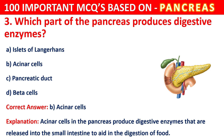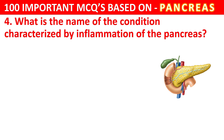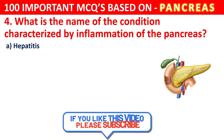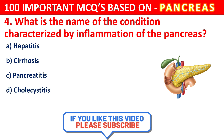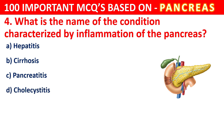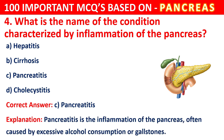Question 4. What is the name of the condition characterized by inflammation of the pancreas? Your options are Hepatitis, Cirrhosis, Pancreatitis, or Cholecystitis. The correct answer is C, that is Pancreatitis. Pancreatitis is the inflammation of the pancreas, often caused by excessive alcohol consumption or gallstones.